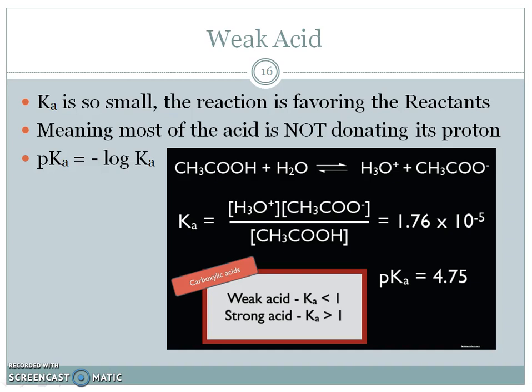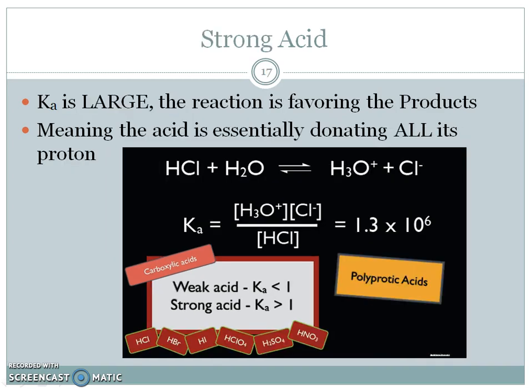So what happens then for a weak acid? This Ka is going to be small. Why is the Ka value going to be small? Because if we notice in our equation, in our algebraic equation, if we have a small number here, less than 1, that means we have more of these guys on the bottom. Think about a 2 over 1 equals 2 versus a 1 over 2 equals 0.5. That's less than 1. That means that we have more molecules, more reactants than we do ions, and that's what makes it weak. That's how we know that we have something weak and it doesn't dissociate 100%.